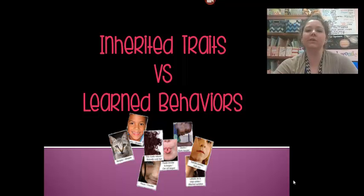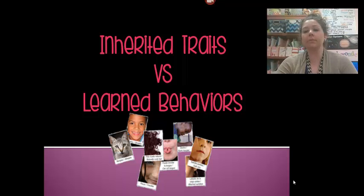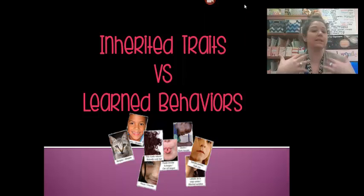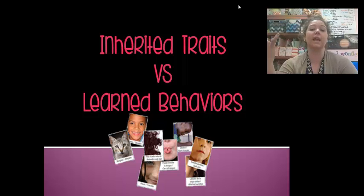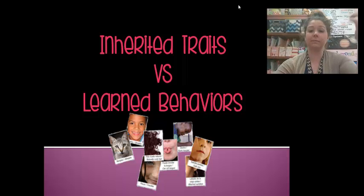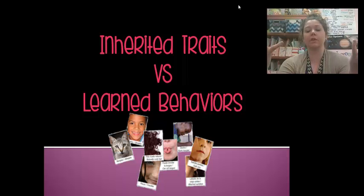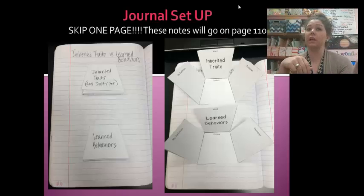Today we are going to learn about inherited traits versus learned behaviors. Think about you and your family and what traits — a trait is just a characteristic, something that describes you — that you have similar to your mom, your dad, or even your grandparents. For example, I have really curly hair, and so does my mom and my dad, so that's a trait that was passed down from them. But sometimes I like to straighten my curly hair — that's something I learned to do, so that would be a learned behavior. We are going to talk about the difference between inherited traits and learned behaviors.